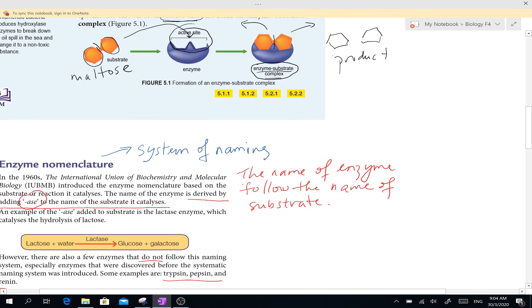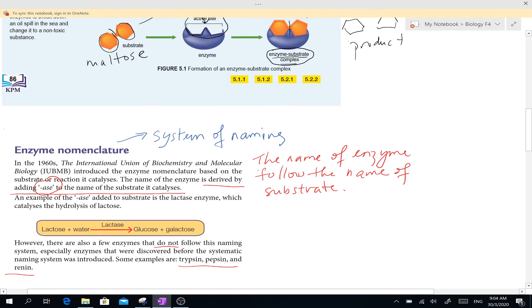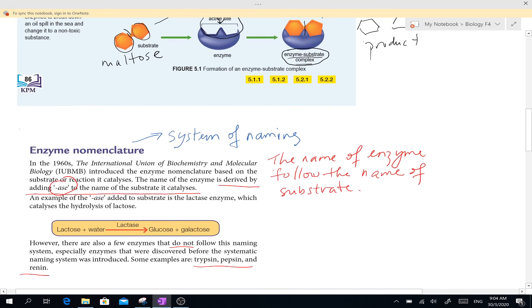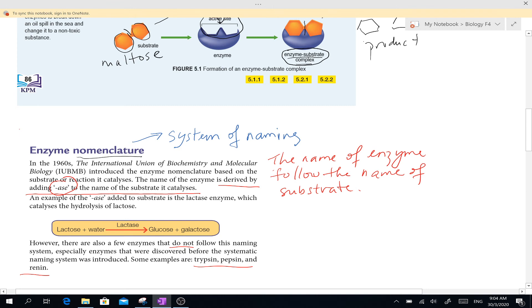One more thing before we stop here. How do you name enzymes? There's a system, a system of naming. We call it nomenclature. Nomenclature means the system of naming a substance. According to a group, this is a scientific community, the International Union of Biochemistry and Molecular Biology.